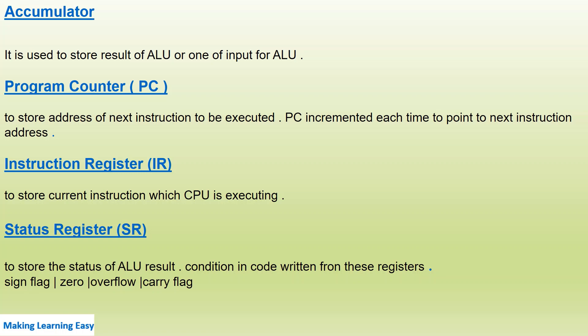The program counter is used to store the address of the next instruction to be executed. It is incremented each time to point to the next instruction. The instruction register (IR) is used to store the current instruction which the CPU is executing.